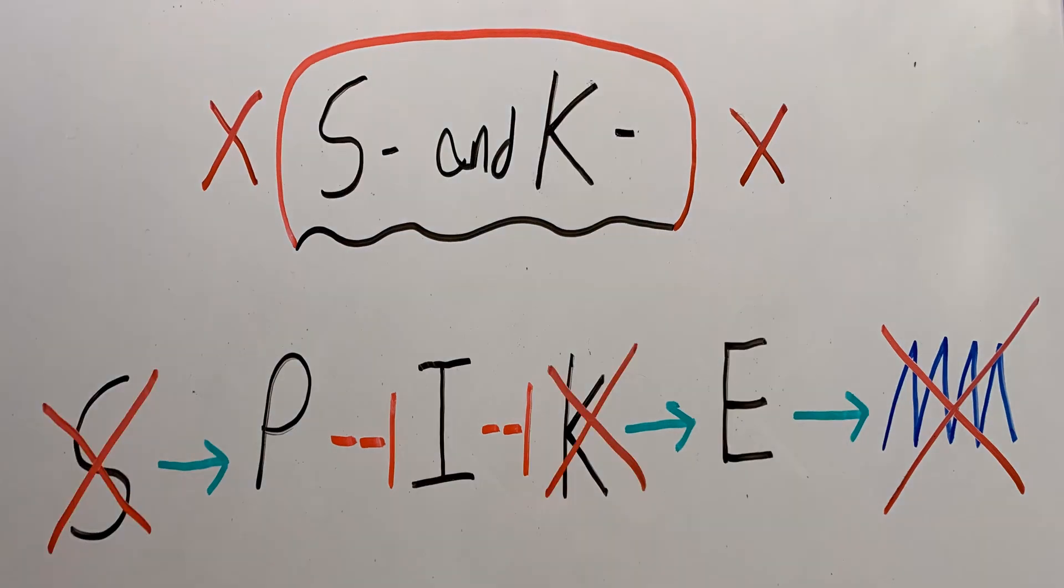And finally we examine our last strain in which we will determine if a mutation to S and K will work out. So S is mutated, which means it is unable to promote P. If P isn't promoted, then there's nothing to inhibit I, so I goes on to inhibit K. However, K is a mutation, so it can't be inhibited, but it also can't go on to promote E. And if E isn't promoted, then there's no way for the formation of spikes, which goes to show that a mutation involving S and K does not work to form spikes.